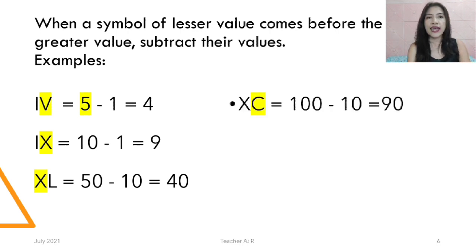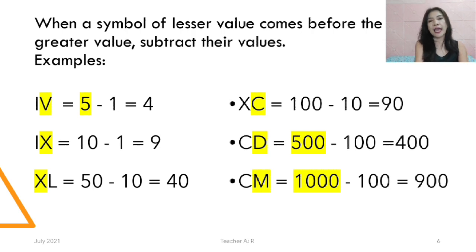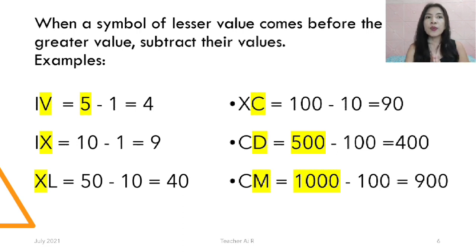XC: 100 minus 10 equals 90. We also have CD: C is 100 and D is 500, so 500 minus 100 equals 400. We also have CM: C is 100 and M is 1000, so 1000 minus 100 equals 900. Always remember: when the lesser value comes before the greater value, it's subtraction.